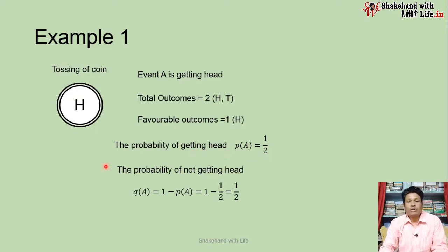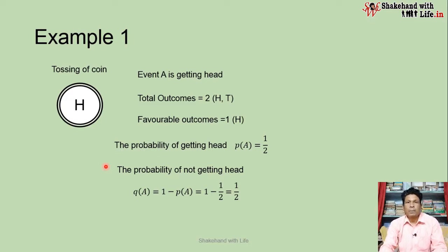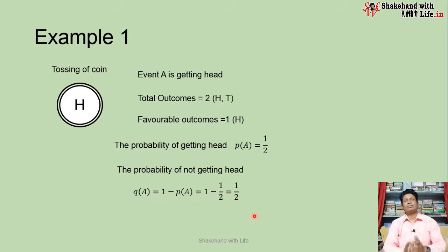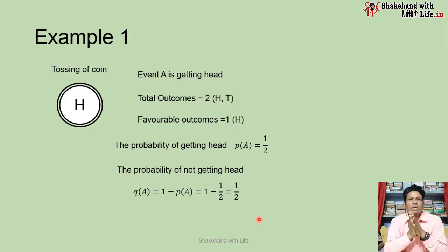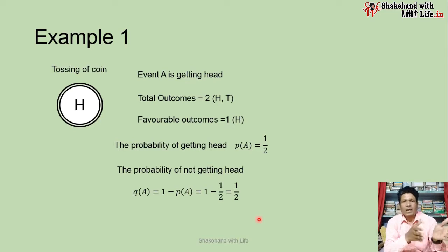The probability of not getting a head — that means getting a tail — is the failure. P(A bar) = Q(A) = 1 minus P(A) = 1 minus 1/2 = 1/2. So we have half and half — when we toss a coin, we have equal probability for getting a head and getting a tail.